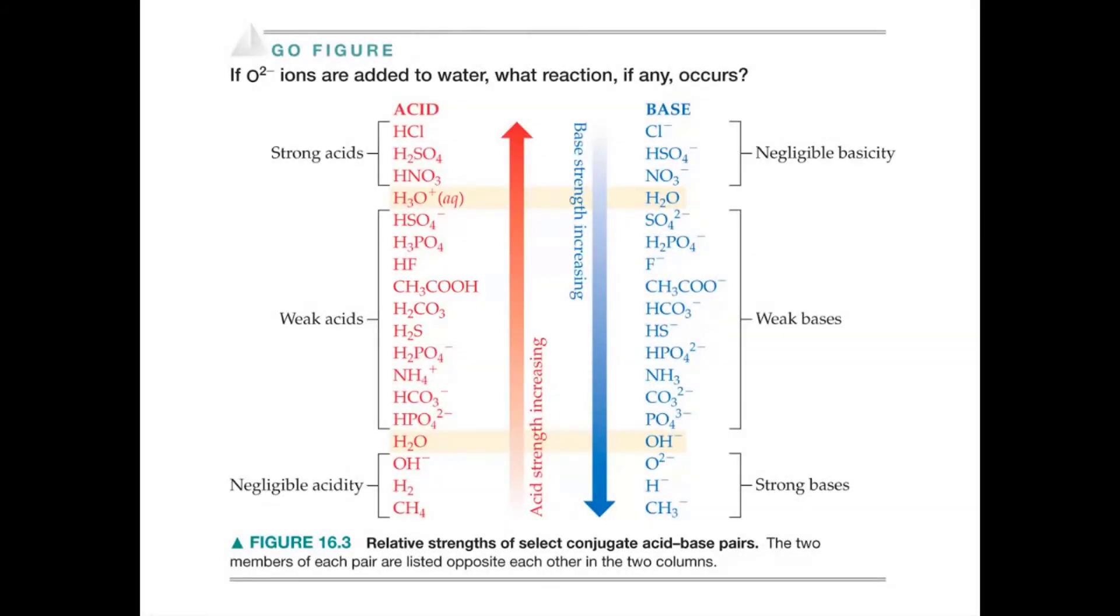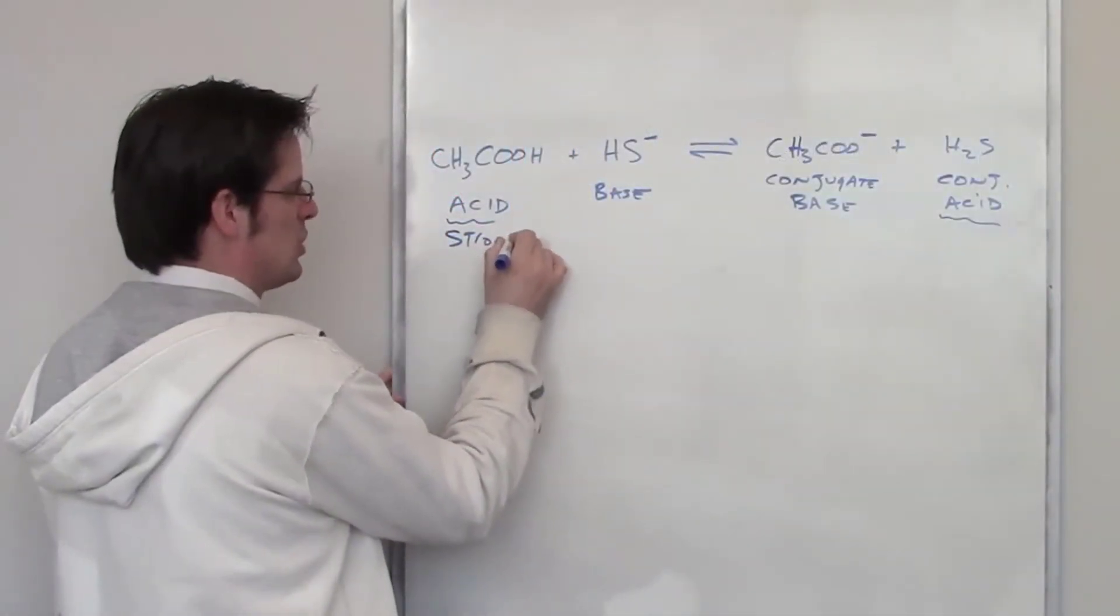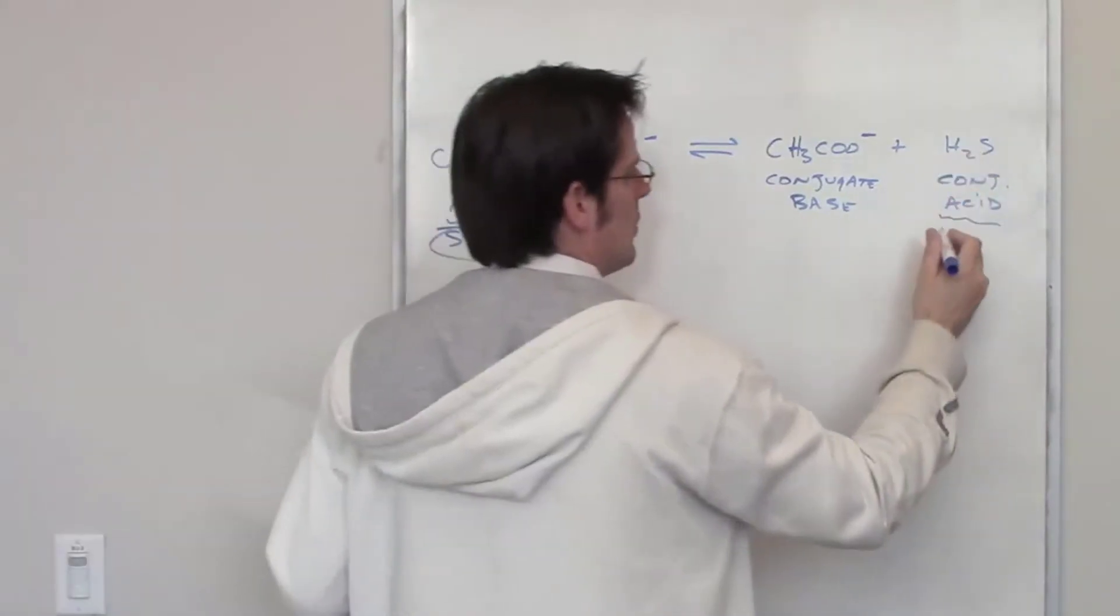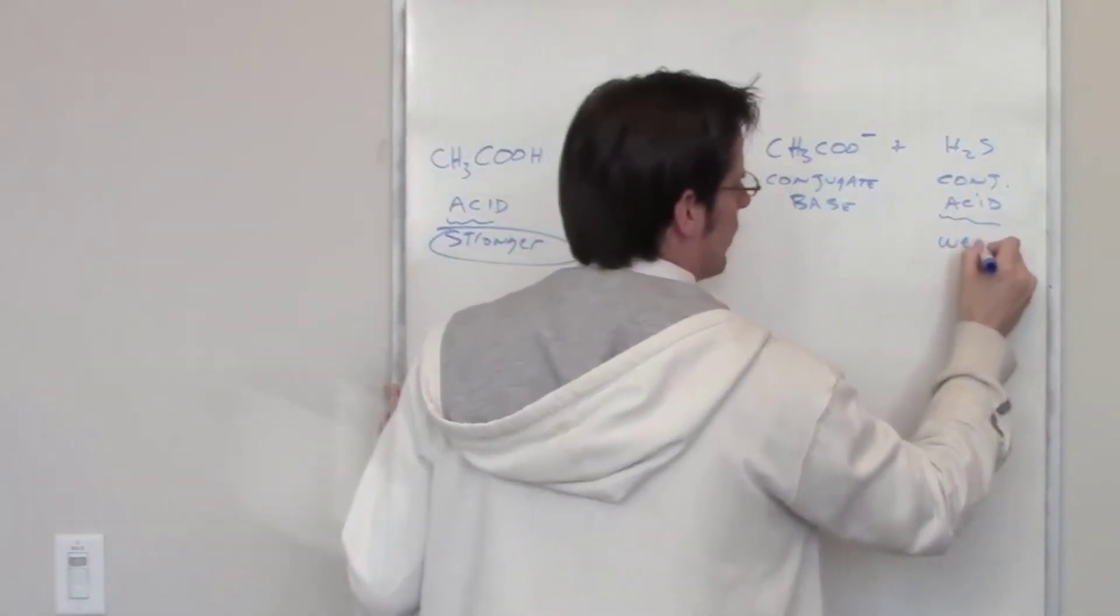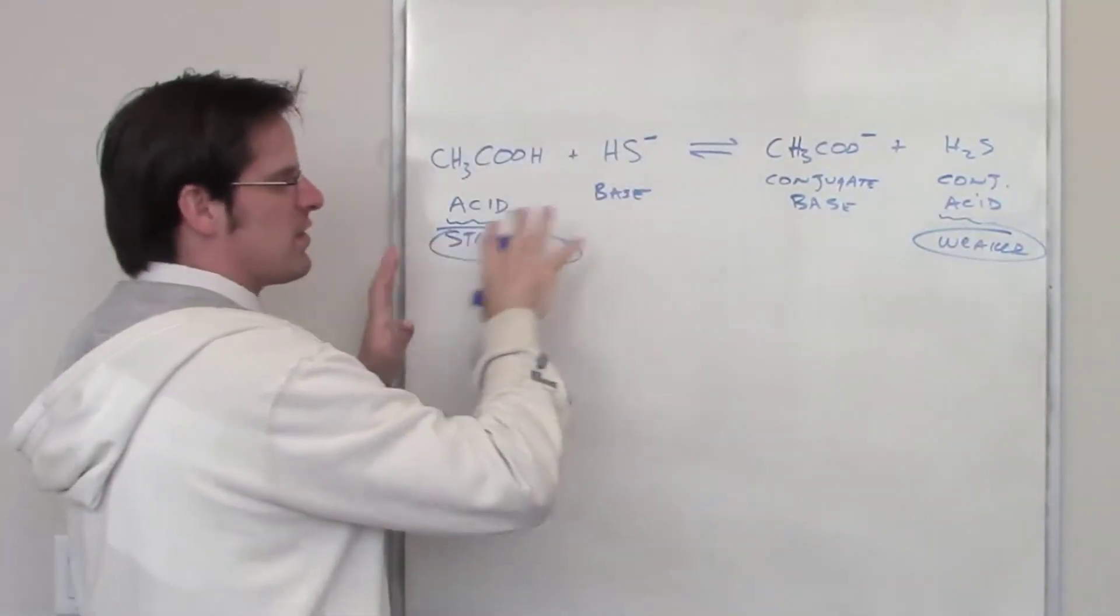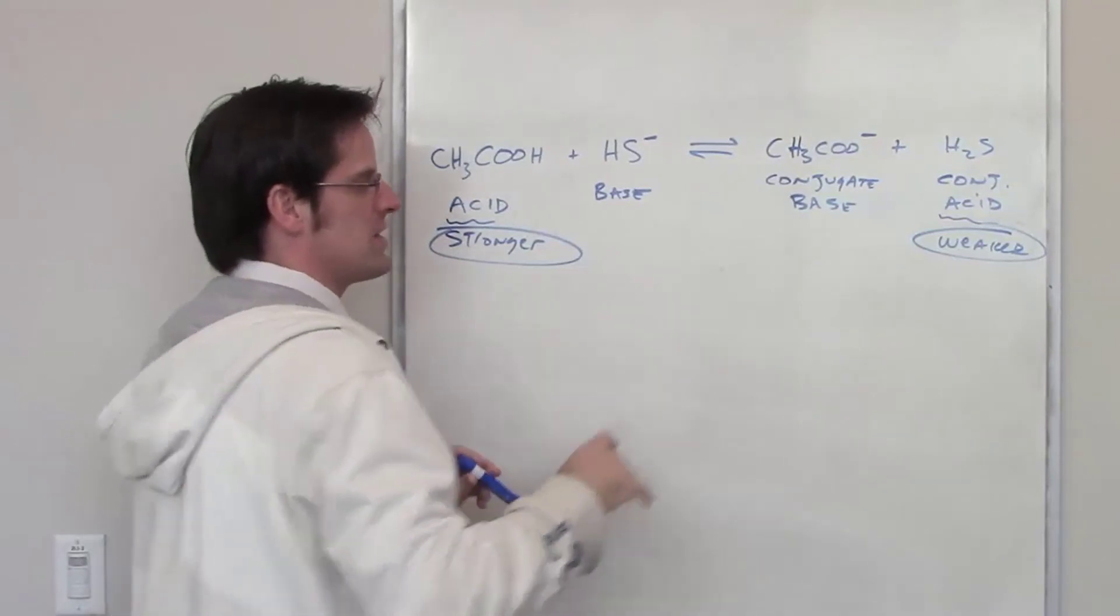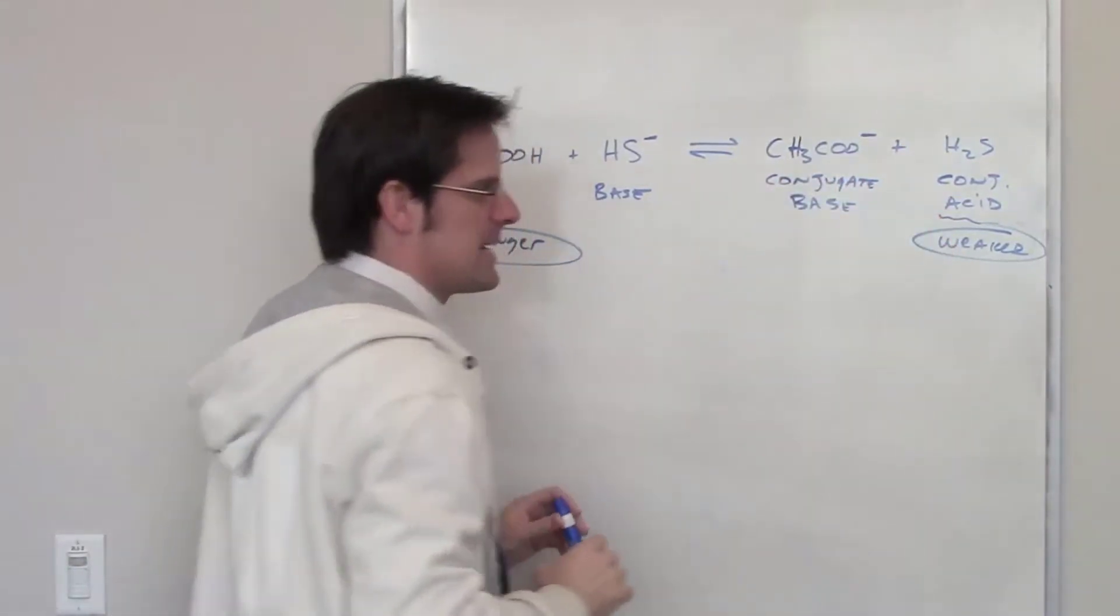Let's take this back to the board and write that down then. So, acetic acid is my stronger of these two acids. H2S is the weaker of these two acids. Remember that equilibrium is always going to want to favor the side where you have less reactive, weaker stuff. So, the side of the reaction that's going to be favored is going to be the right-hand side.